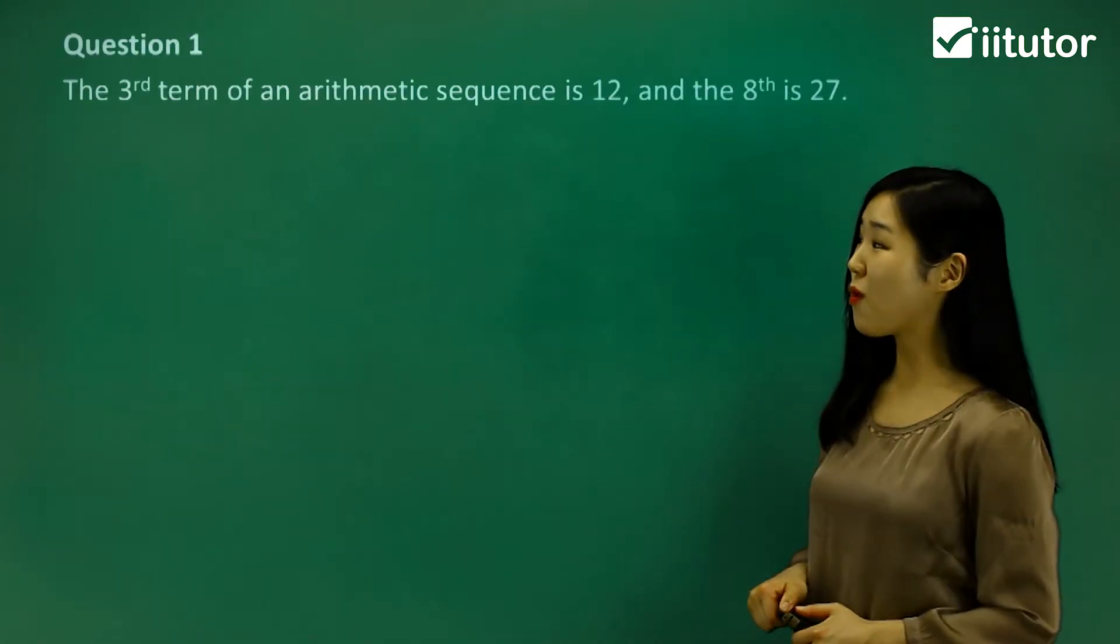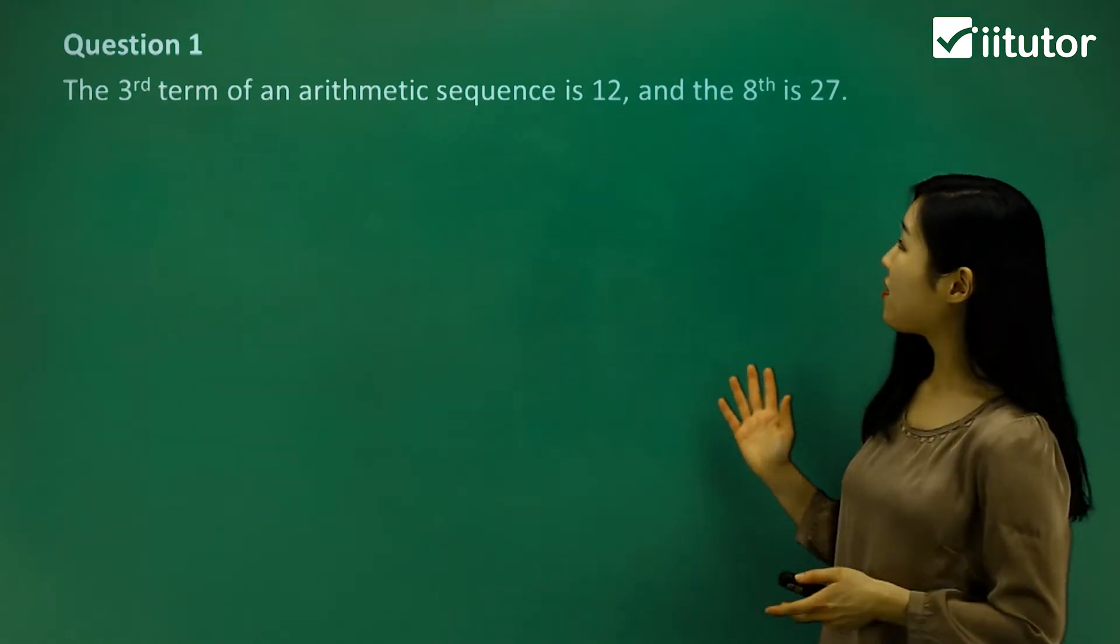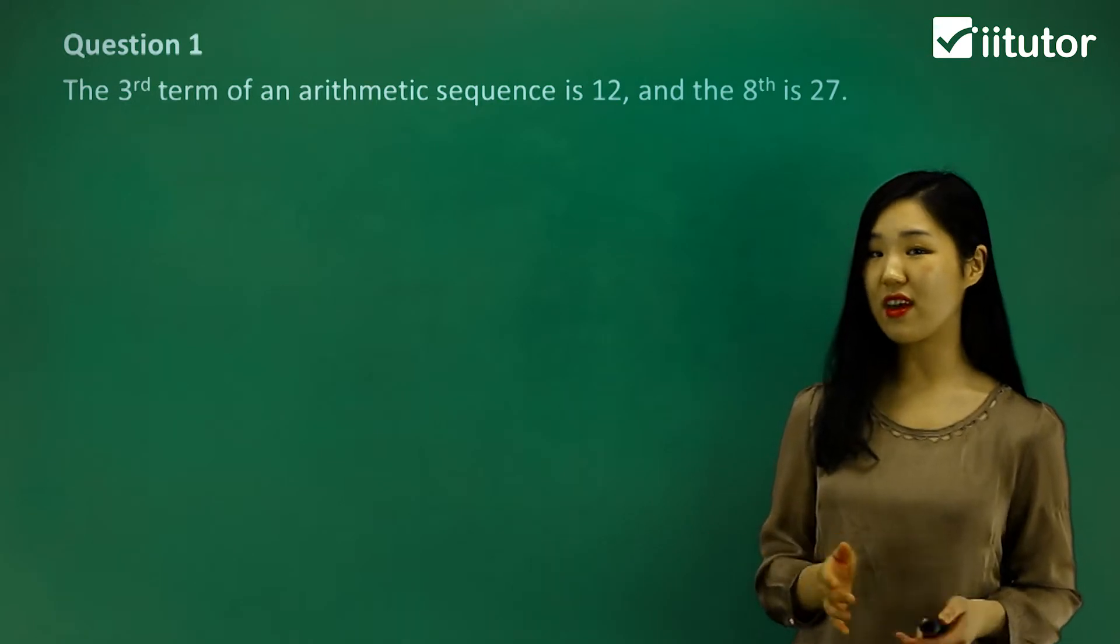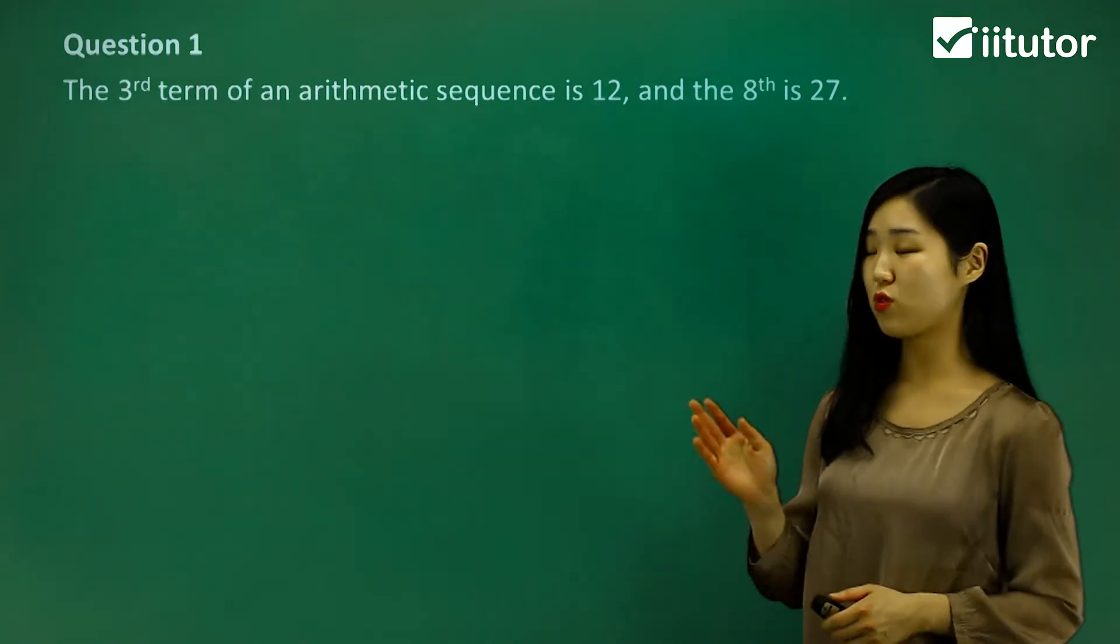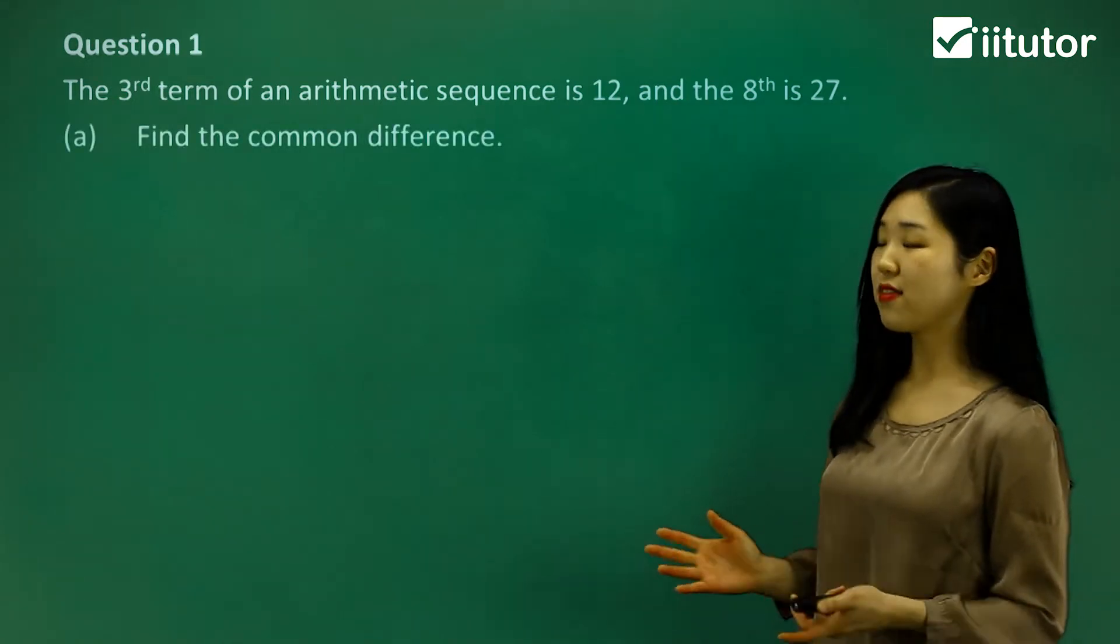We go to question one. It says the third term of an arithmetic sequence is 12 and the eighth term is 27. So we know the third term is 12 and the eighth term is 27. We're going to first find the common difference.